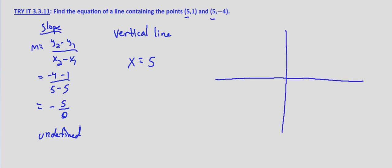And that's the only way. If you graphed it as well, you'd have (5, 1), so 1, 2, 3, 4, 5, 1, and (5, -4),